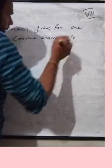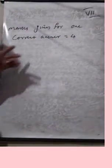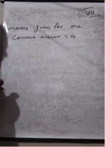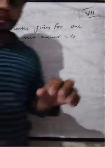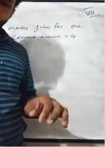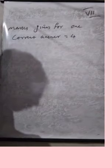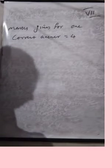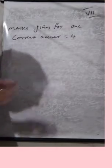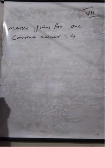Marks given for one correct answer is 4. So marks given for 9 correct answers — that is her total score for correct answers. Minus 2 marks are given for incorrect answers. Gurpreet attempts all questions but only 9 are correct.